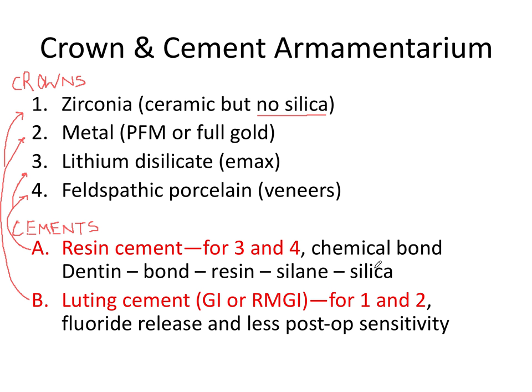The silane functions to improve the bond strength to the crown. That's the best way to break down the layers in order of application: treating the tooth side with either etch and/or some primer or bond, treating the crown with its own etch and silane, then cementing both tooth and crown together.